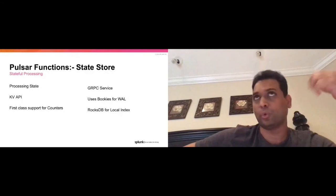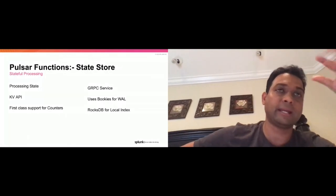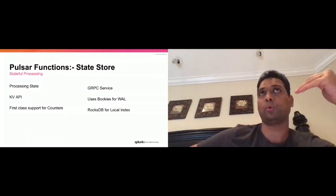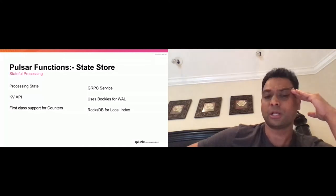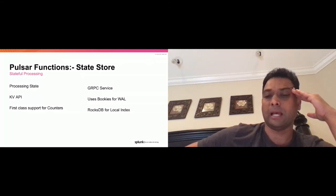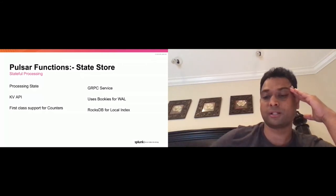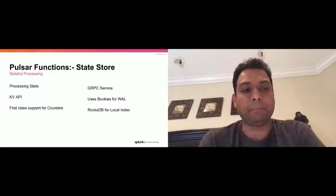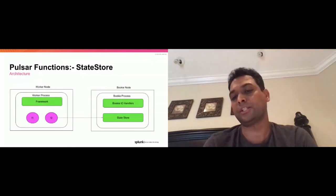Functions will have things like: store this particular state from this function. On failures, you can get that state, see where you were, and keep going. This KV store is geared towards keeping function states and has first-class support for gauges, counters, and other usual suspects measured inside functions. At the end of the day, it's a gRPC service. It uses bookies as its write-ahead log and uses RocksDB for its local index. Typically, the state store is deployed as part of the bookie node itself.